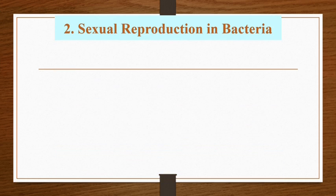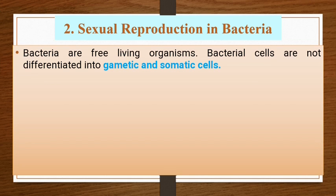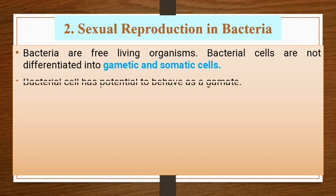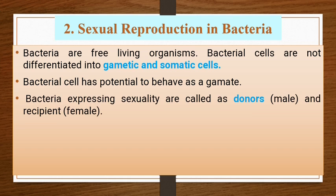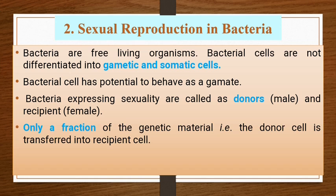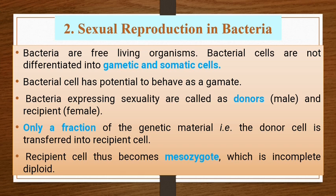In sexual reproduction in bacteria, bacterial cells are not differentiated into gametic or somatic cells. Each bacterial cell has the potential to behave as a gamete. Bacteria expressing sexuality are called donor (male) and recipient (female). Only a fraction of the genetic material from the donor cell is transferred into the recipient cell. The recipient cell thus becomes a merozygote, which is incompletely diploid.